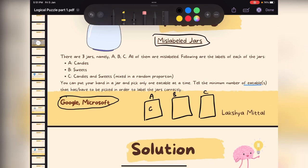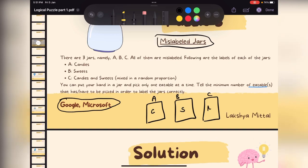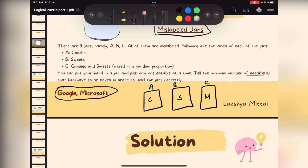So in jar A we have candies, jar B we have sweets, and jar C we have a mixture of both candies and sweets in a random proportion. So basically in this jar we have candies and sweets in a random proportion. And in this jar we have only sweets and in this jar we have only candies.